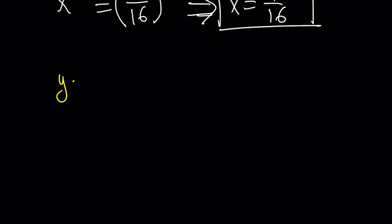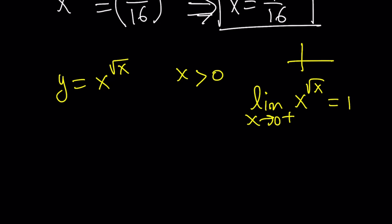Y equals x to the power square root of x as a function. X must be positive. I don't want it to be zero because zero to the power zero is problematic. If you take the limit as x approaches zero from the right, you can't approach from the left because x cannot be negative. This is going to become one. If you remember the graph of x to the power x, it's kind of like this. There's a hole at zero, one. It has a minimum. Our graph is going to be similar to this because I'm replacing the exponent x by square root of x.